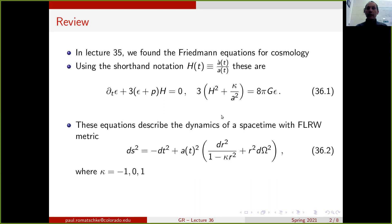These equations describe the dynamics of a spacetime that is given by the FLRW metric, which is written in the line element form over here, where the parameter kappa takes the values minus 1, 0, or 1. In this lecture, I want to explore solutions to these equations of motion that describe an expanding universe.